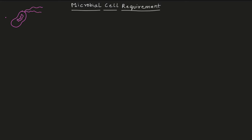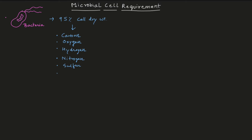Let's start by looking at the bacterial cell. An important fact is that 90% of the cell dry weight is made up of specific elements. Those elements are: carbon, oxygen, hydrogen, nitrogen (an important part of proteins), sulfur, potassium, phosphorus, calcium, magnesium, and iron. These are the important macro elements.